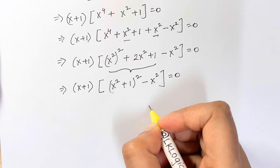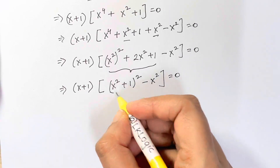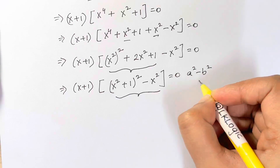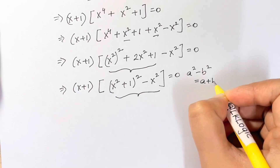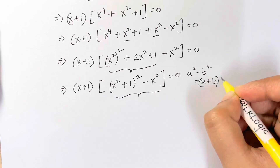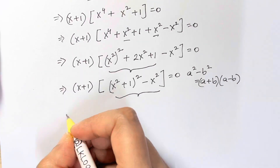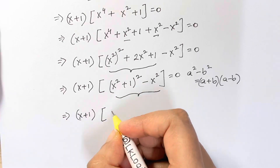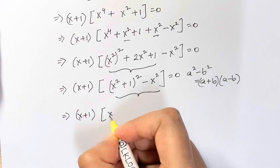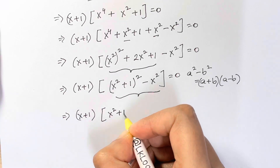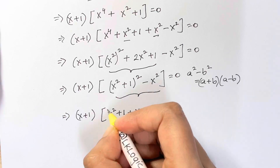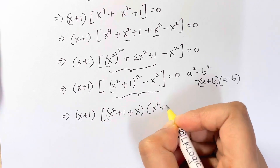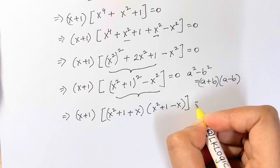Applying the difference of squares identity a² - b² = (a+b)(a-b), we get (x+1) times [(x²+1+x)(x²+1-x)] = 0, giving us three factors: (x+1)(x²+x+1)(x²-x+1) = 0.